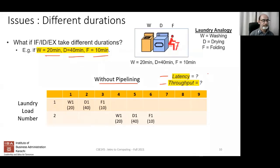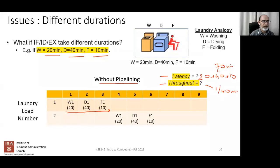A student answers: without pipelining, the latency would be 70 minutes — that's 20 + 40 + 10. The throughput would be one per 40 minutes. But the instructor corrects: the units for throughput are critical. Saying 'throughput is 40 minutes' would be marked wrong — it should be one per 40 minutes.